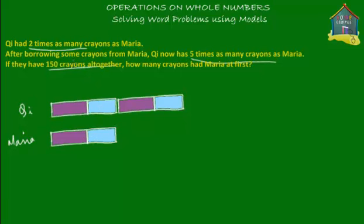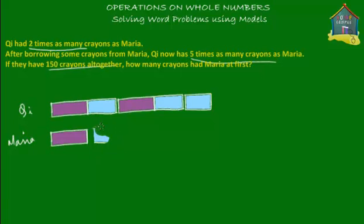Maria gave some of her crayons to Chi — that is, she gave the blue part to Chi. After giving that, Chi has five times as many crayons as Maria. So we take this blue part here and give it to Chi. Chi now has another block of crayons equal to the blue part. Maria doesn't have this anymore, so we erase that part. We put a dotted line here because we know she used to have some crayons before which she gave to Chi — this is the blue part that she gave to Chi.